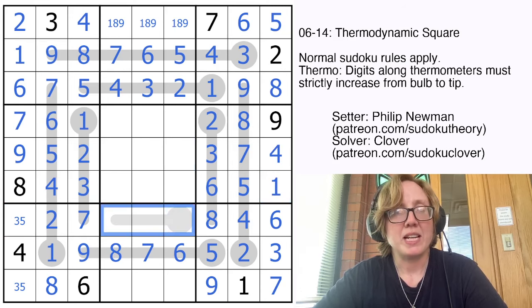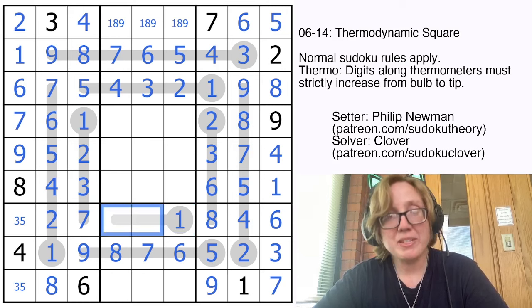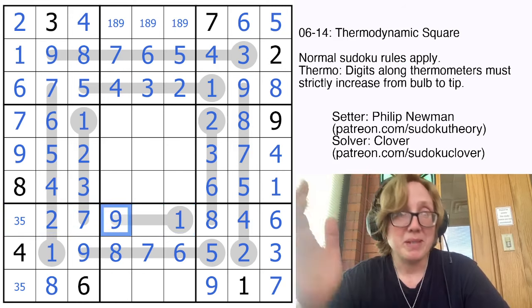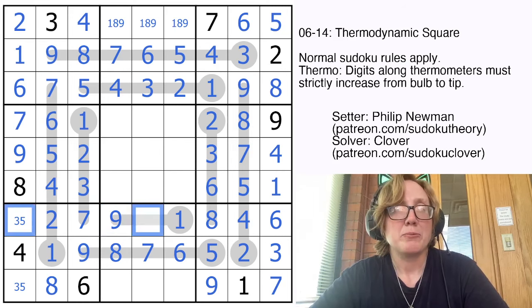And now the very last thing we're going to look at is this tiny little thermometer right here. It has to have a 1 on it somewhere because there's no 1 in the row. So the 1 can only go in the bulb. It has to have a 9 on it, so the 9 can only go in the very end. It can't go in the middle. There's nothing bigger than 9.